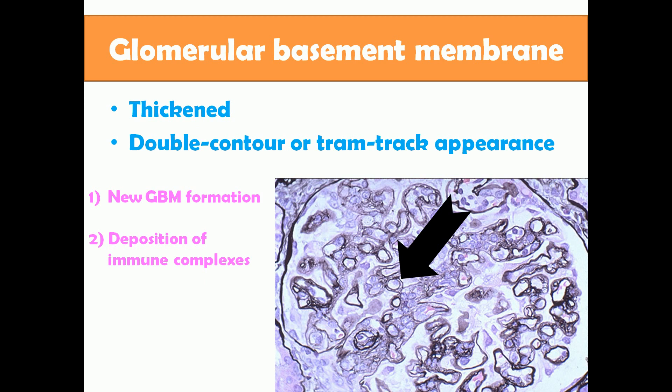The two separate black layers around the capillaries result from two main reasons: first, new glomerular basement membrane formation over the pre-existing one, induced by the subendothelial deposits; and second, deposition of immune complexes within the glomerular basement membrane itself, creating the appearance of two separate layers. This characteristic appearance on silver stain is described as double contour or tram track appearance.